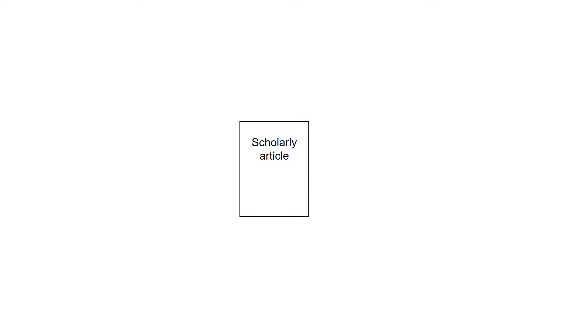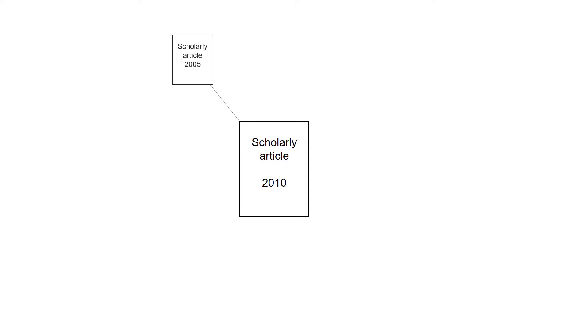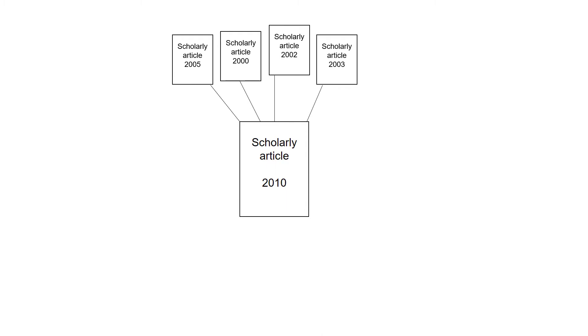Let's take this scholarly article for example. We can trace its family tree. Let's imagine this article was published in a research journal in the year 2010. It's a research article and the author is a college professor. In this article, she discusses previous studies done in the early 2000s and she discusses how they each informed her work.